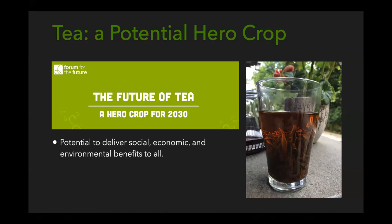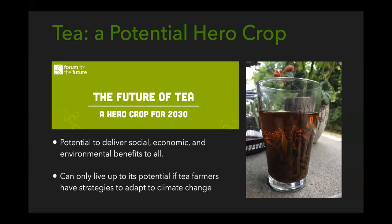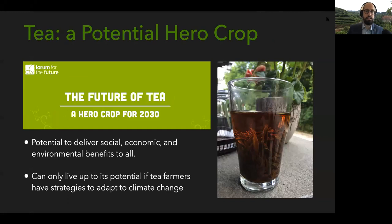There's a report from a nonprofit called the Forum for the Future about the future of tea. They call tea a hero crop or a potential hero crop, because it has the potential to deliver social, economic, and environmental benefits to everyone in the supply chain, from farmers all the way up to consumers. In this report, they identify scenarios where tea can live up to that hero crop potential only when farmers have the tools and support of governments to adapt to climate change.